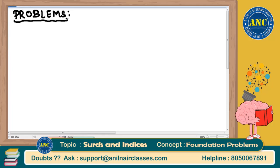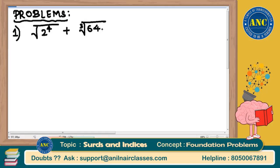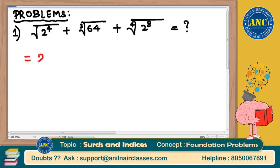We will start with some easy basic questions on surds and indices. First question: square root of 2 power 4, multiplied by cube root of 64, multiplied by fourth root of 2 power 8. I need to find the value of this expression. This can also be written as 2 power 4.